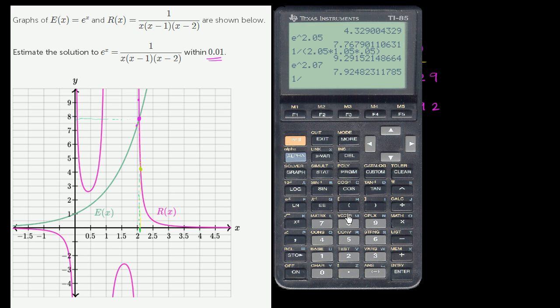And now let's evaluate R(x) at that same value. So 1 divided by x, which is 2.07, times that minus 1, which is 1.07, times that minus 2, which is 0.07, which gives us 6.450.